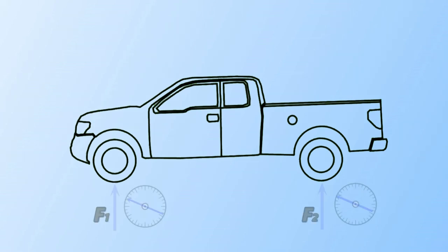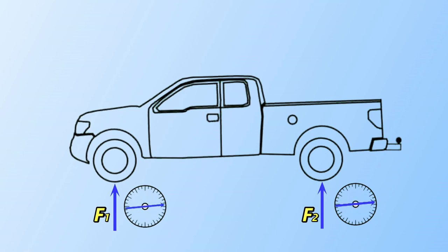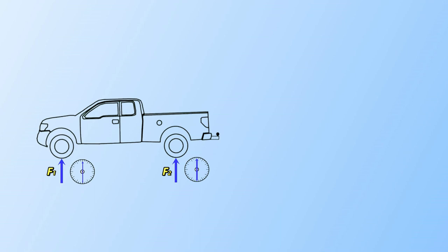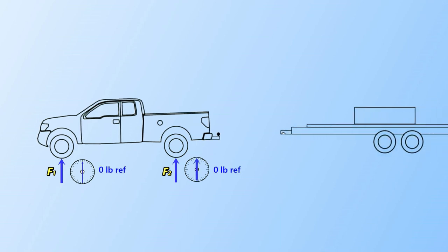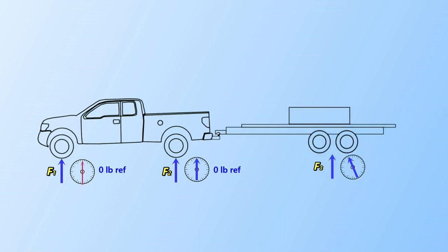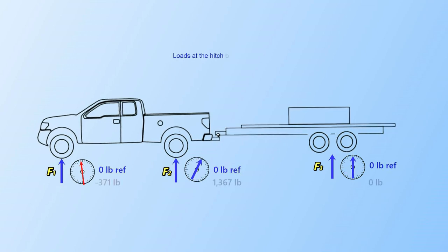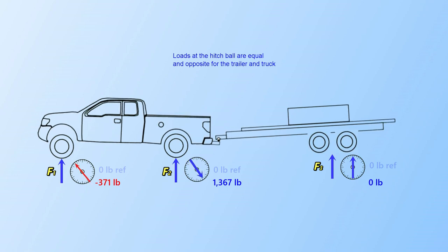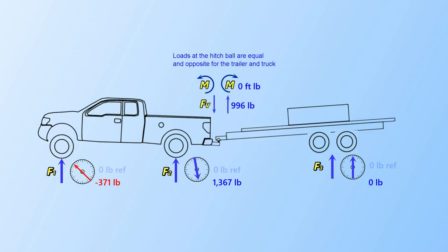We place scales under each truck axle, install the hitch receiver, tare the scales, then bring the trailer to the truck. A third scale is located under the tandem trailer axles and tared. As the tongue is lowered onto the truck, we can easily read the change in load on the truck front and rear axle. Trailer axle load is unchanged.